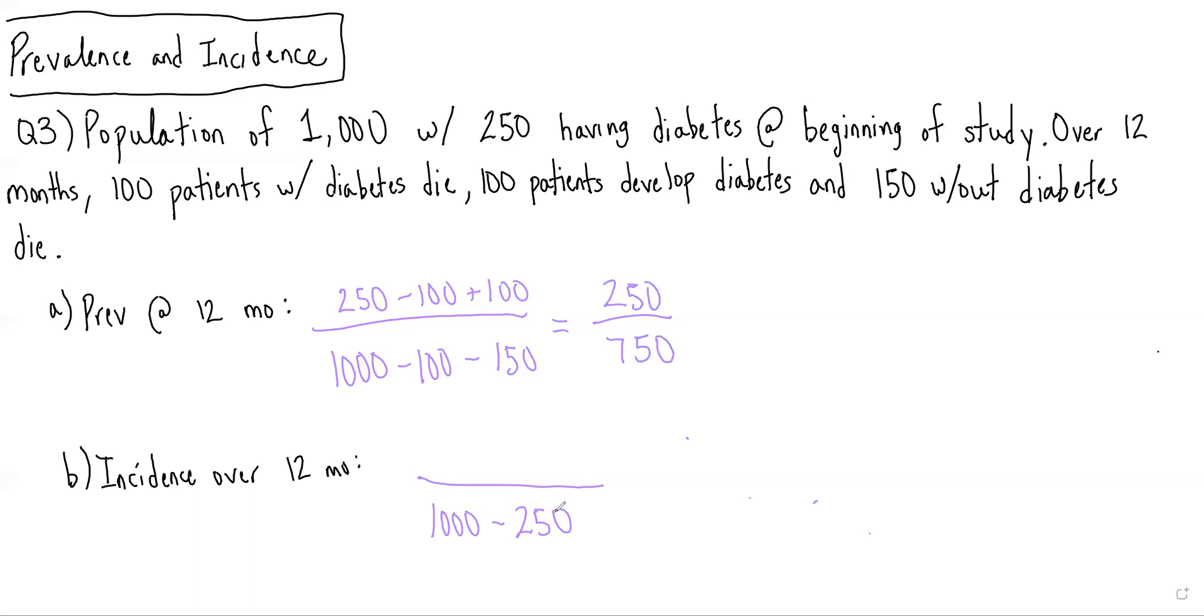Then we see, over the 12 months, 100 patients develop diabetes. Therefore, our incidence will be 100 over 750.